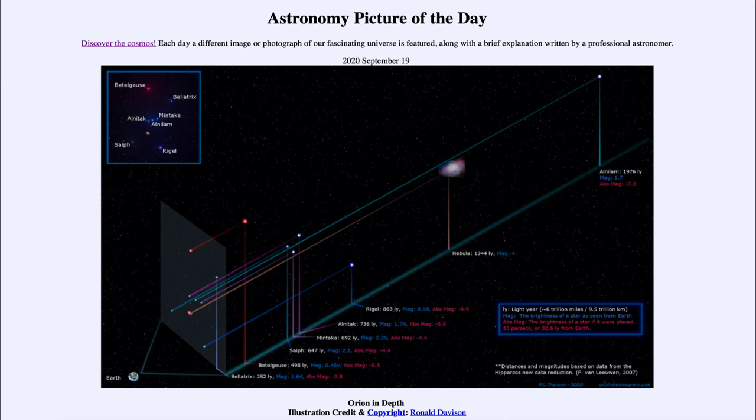You would have to travel many hundreds of light years, but you could travel to a point in the sky where Betelgeuse is on one side of the sky and Rigel is on the other. They would no longer be part of a constellation. The constellations are just what we happen to see from our point in space.